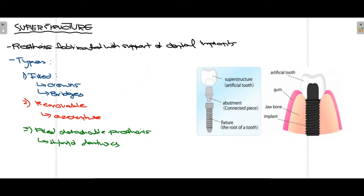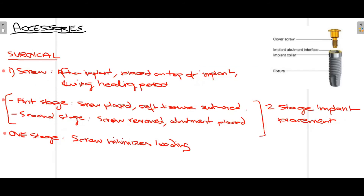The next part is the superstructure, which is actually visible in the oral cavity. It is the prosthesis fabricated with the support of dental implants, placed on top of the abutment, also known as the artificial tooth. The superstructure is of three types: fixed (crowns and bridges), removable (overdentures), and fixed detachable (hybrid dentures). In this diagram you can appreciate the fixture, abutment, and superstructure all together.